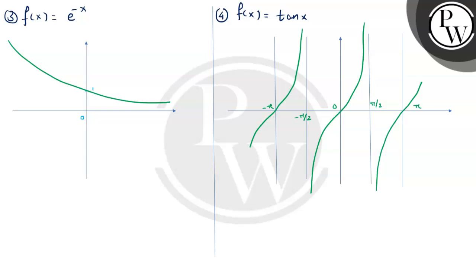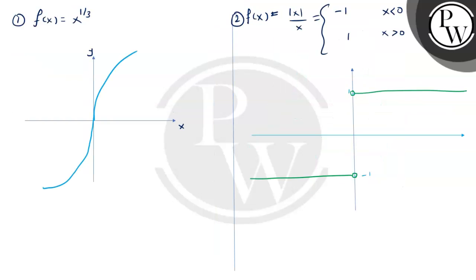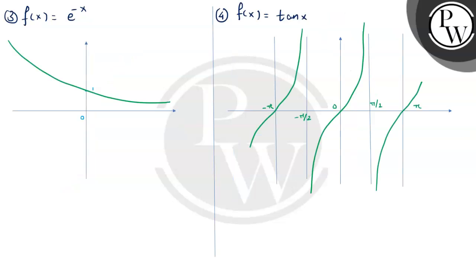Now let's analyze the functions and get the answer. From the graphs: f(x) equals cube root of x is continuous over its entire domain (all real numbers). f(x) equals mod x by x is continuous over its domain since zero is excluded. f(x) equals e raised to minus x is continuous over all real numbers. And f(x) equals tan x is continuous at all real numbers except the set of elements of the form (2n+1)π/2 — that is, it is continuous over its domain.